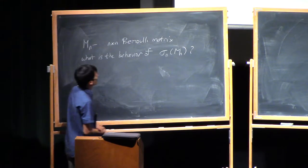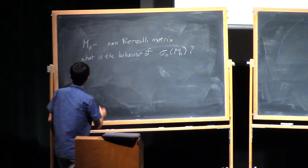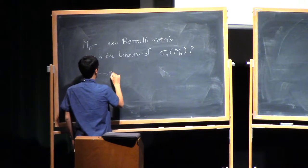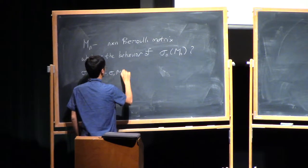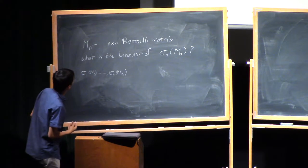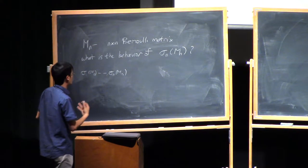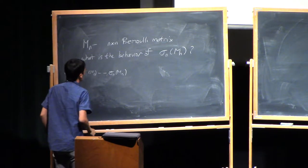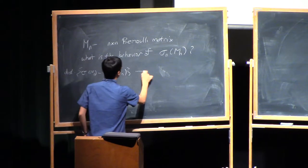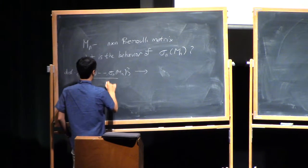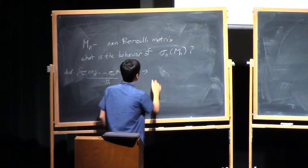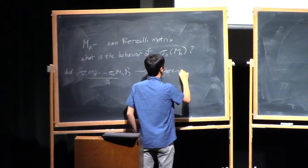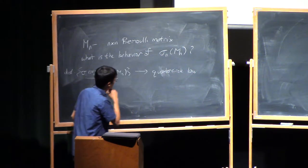You can use the moment method to understand the bulk distribution. If you look at all N singular values at the same time and normalize by root N, the distribution of the entire eigenvalues converges to what's called the quarter circle law — a special case of the Marchenko-Pastur law.